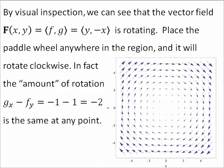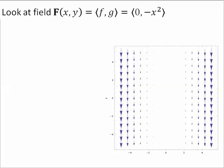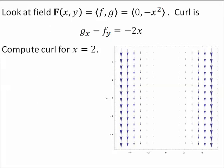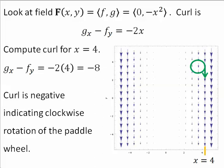How about this vector field? Find its curl. Curl is negative 2X. What is the curl for all points where X equals 4? If X equals 4, then curl is negative, indicating clockwise rotation of the paddle wheel.